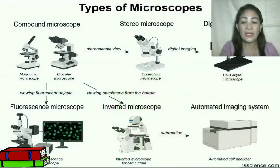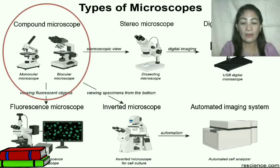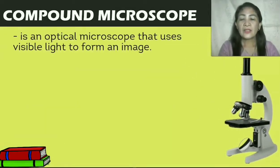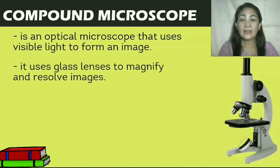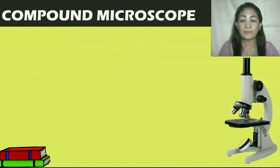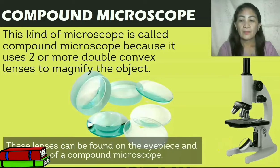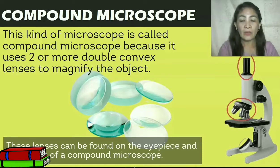There are different types of microscope, but for this lesson we are going to focus on the compound microscope. It is an optical microscope that uses visible light to form an image. It uses glass lenses to magnify and resolve images. This kind of microscope is called a compound microscope because it uses two or more double convex lenses to magnify the objects. These lenses can be found on the eyepiece and objectives of a compound microscope.